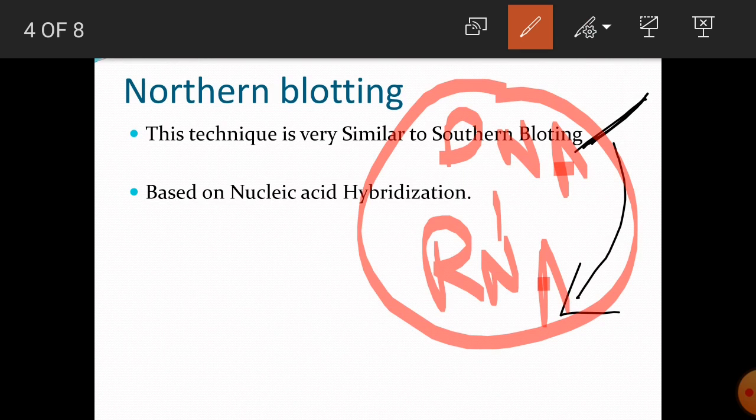Northern blotting is based on nucleic acid hybridization. Nucleic acid hybridization is a technique in which single stranded nucleic acid molecules are allowed to interact so they will form a complex and hybrids are formed with the help of binding with their complementary strands.